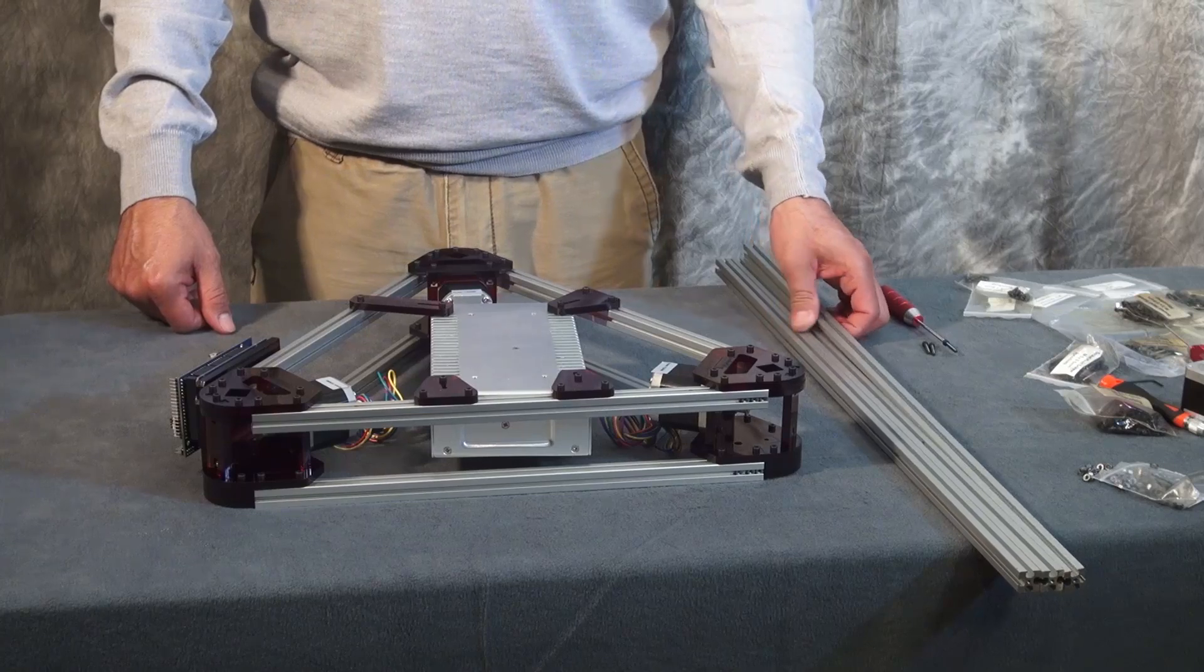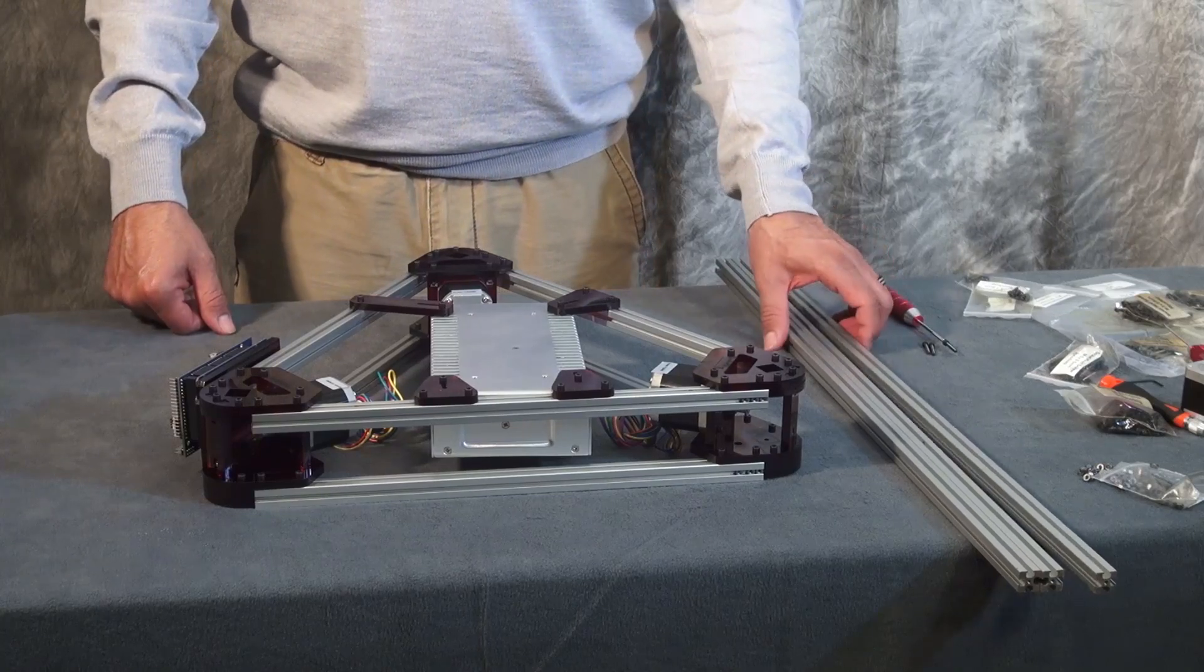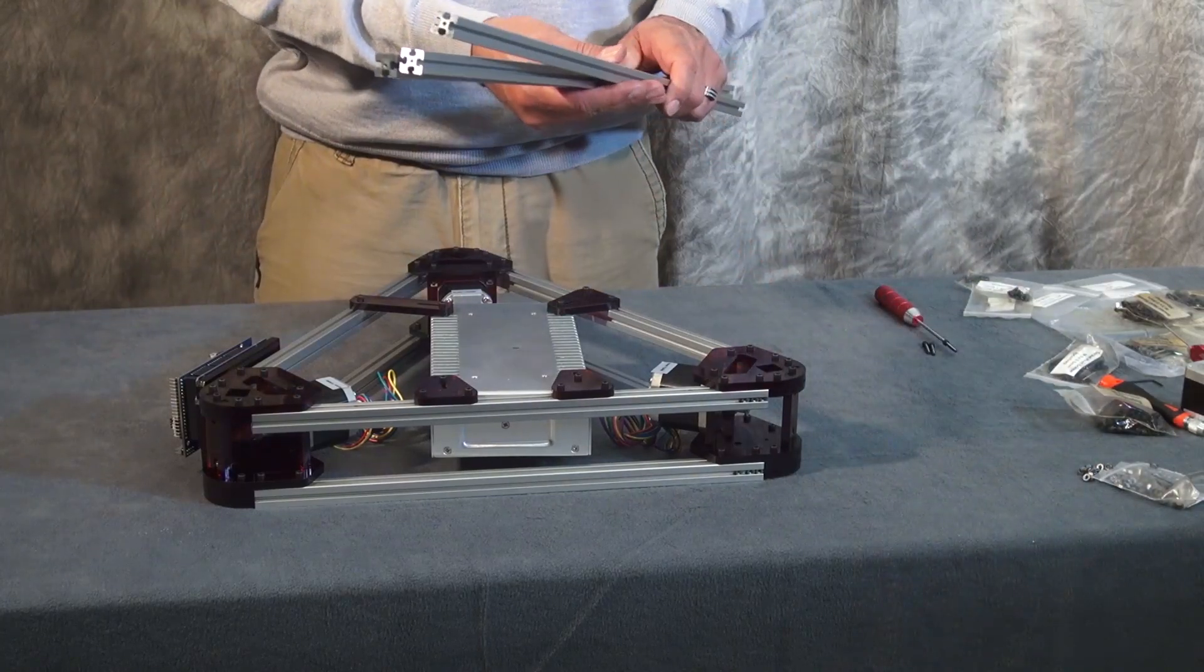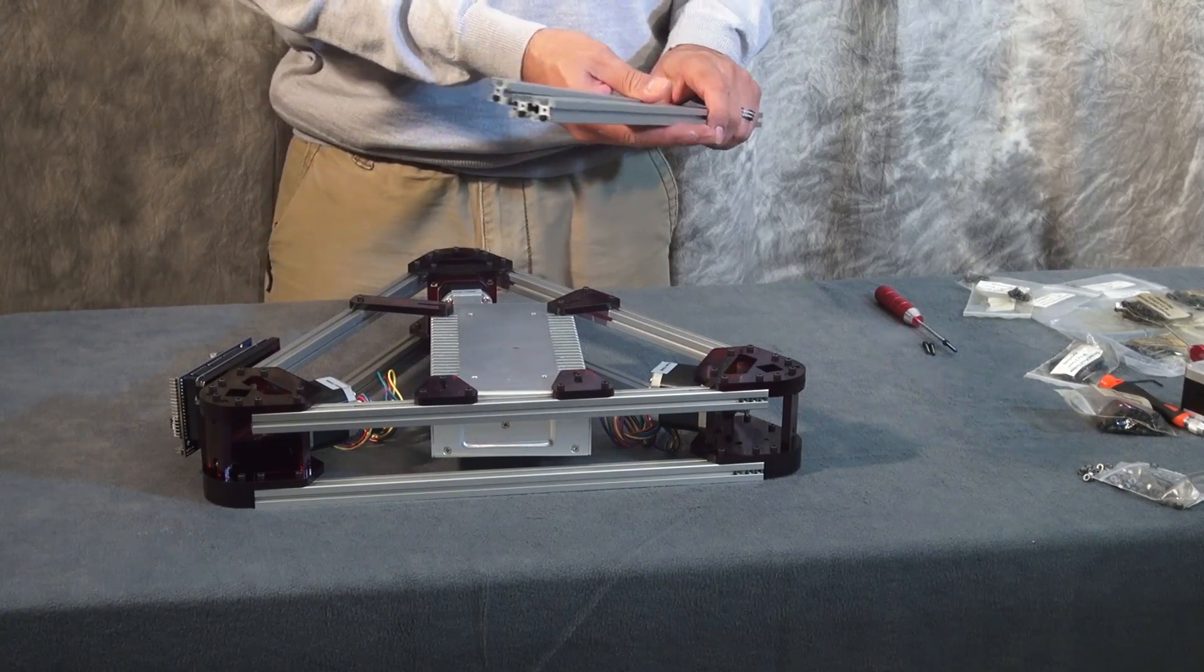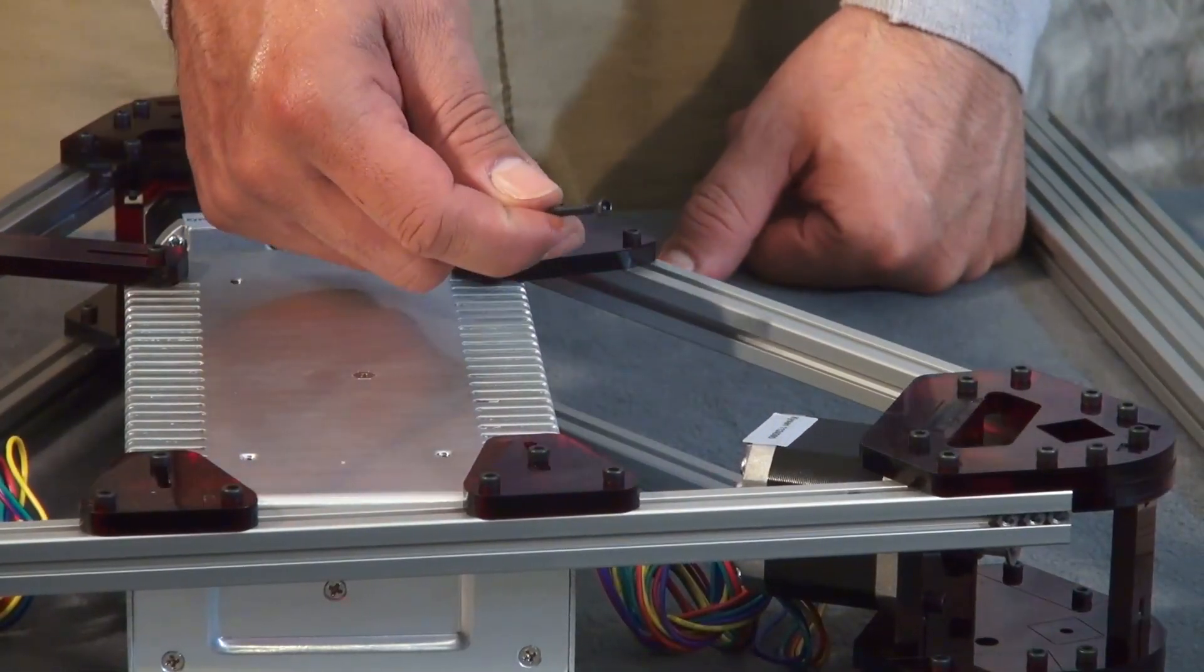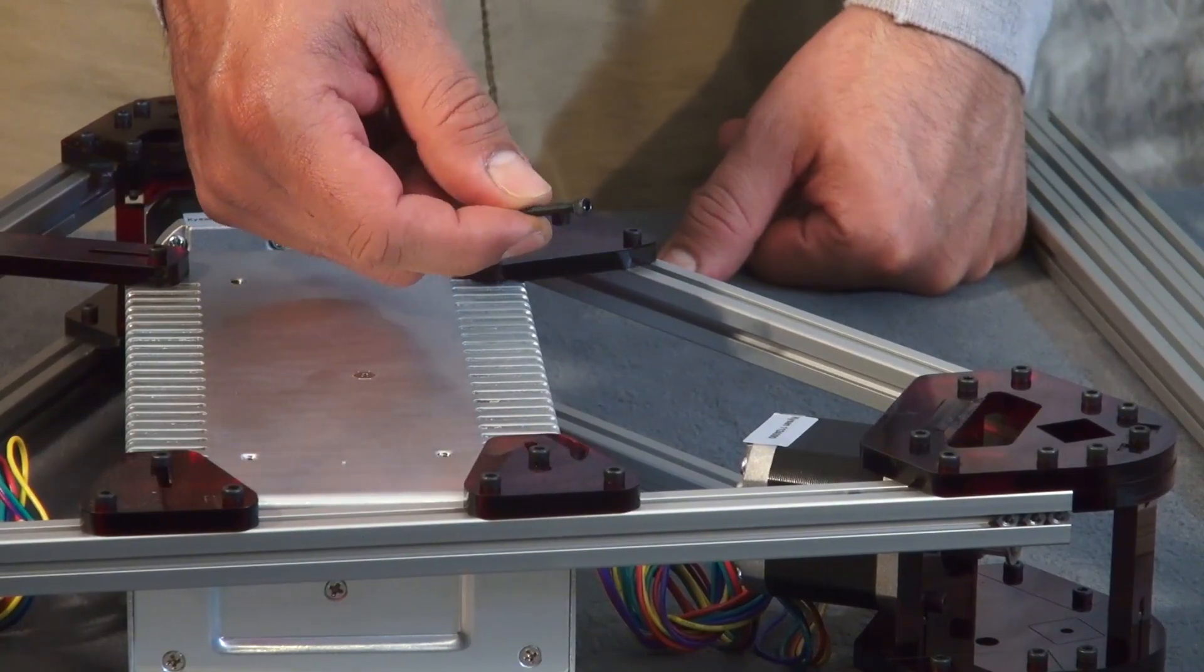Next step is to install the side post. What you will need is three 720mm aluminum bars and three M3 by 20mm bolts.